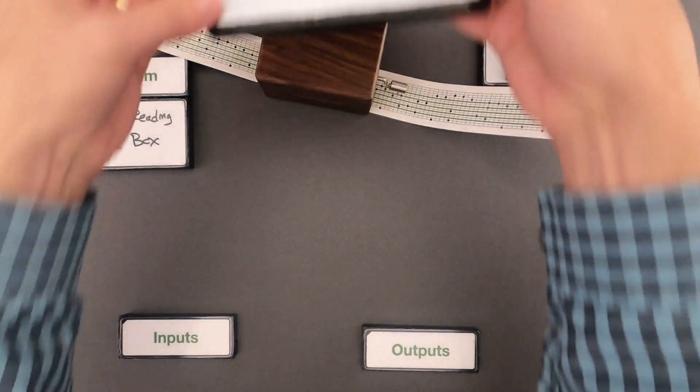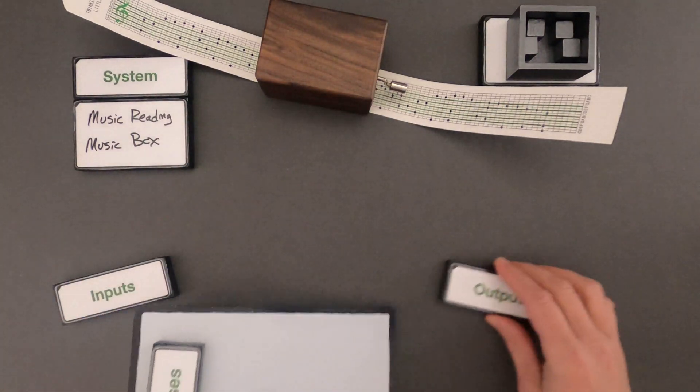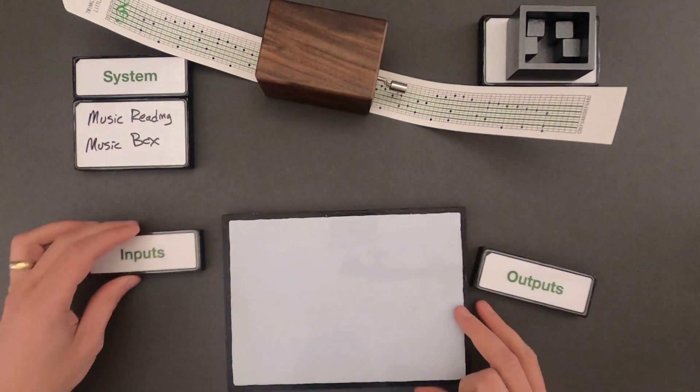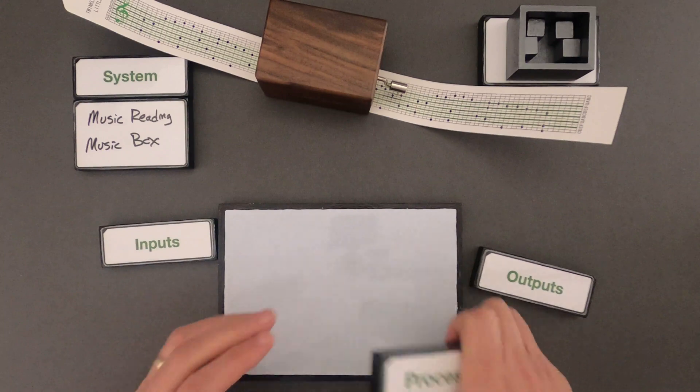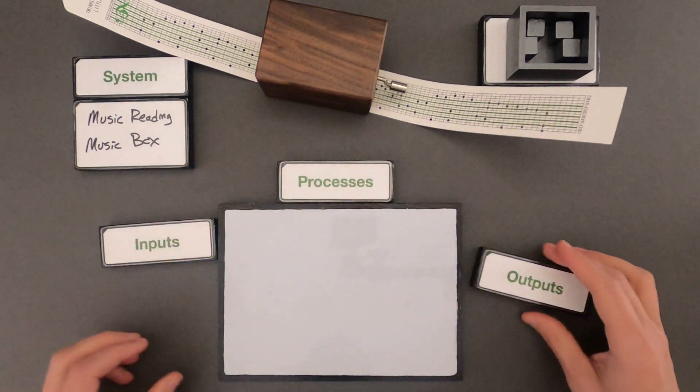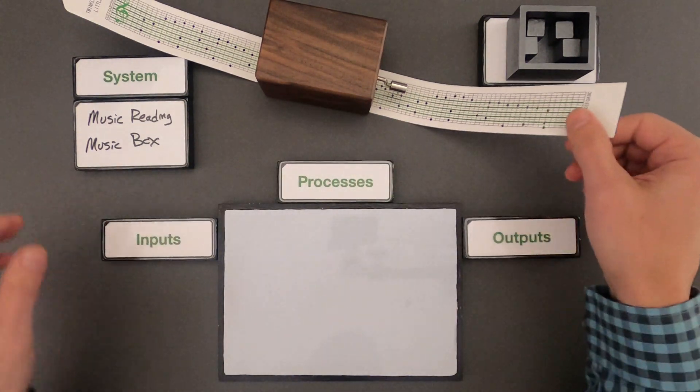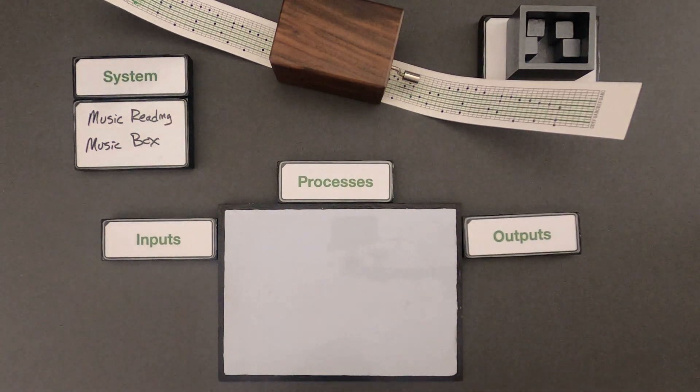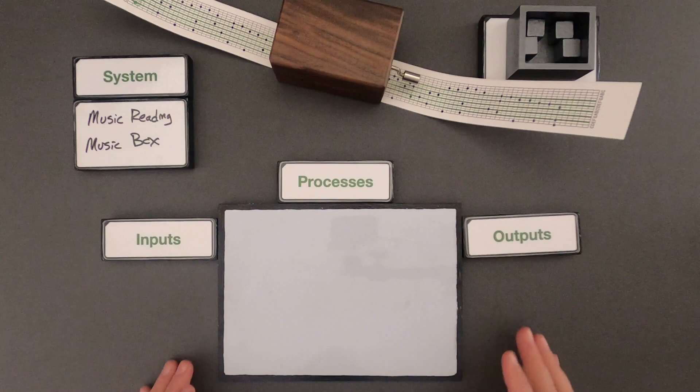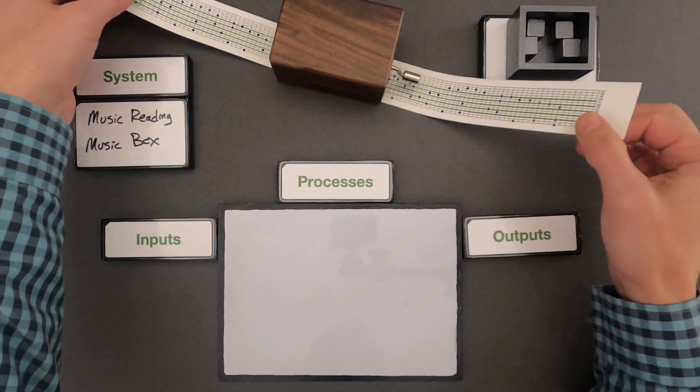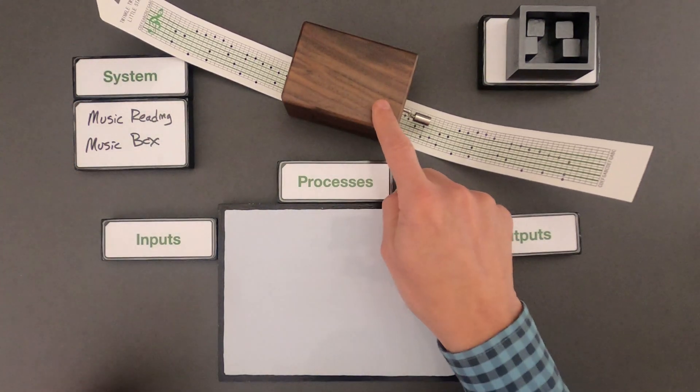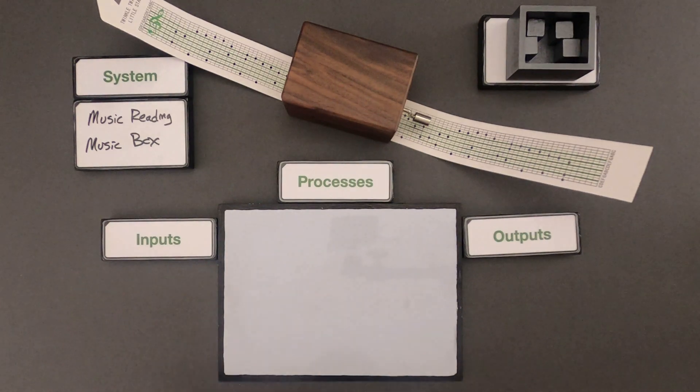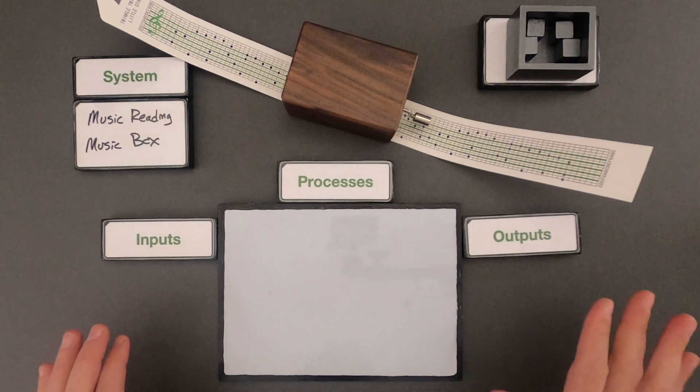The next thing we'll do is we will try to identify what are the inputs into the system, what's coming into the system, what are the processes within the system, and then what are going to be the outputs out of the system. So we'll use this as an example. The first thing that I always do when I'm looking at any kind of a system like this is I think about what's going in and then what's coming out. So let me show you what I think are the inputs and the outputs.